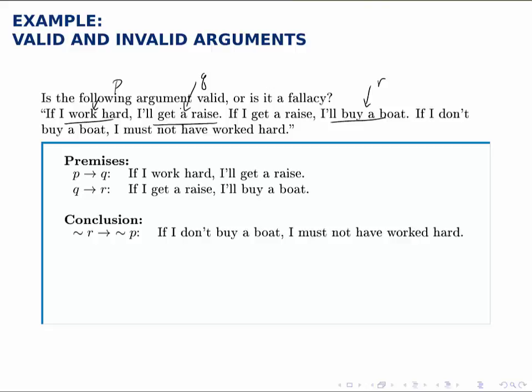The conclusion is if I don't buy a boat, not R, I must not have worked hard, not P. So the argument looks like this: P implies Q, Q implies R, therefore not R implies not P, and again those three dots in that triangular pattern mean therefore.